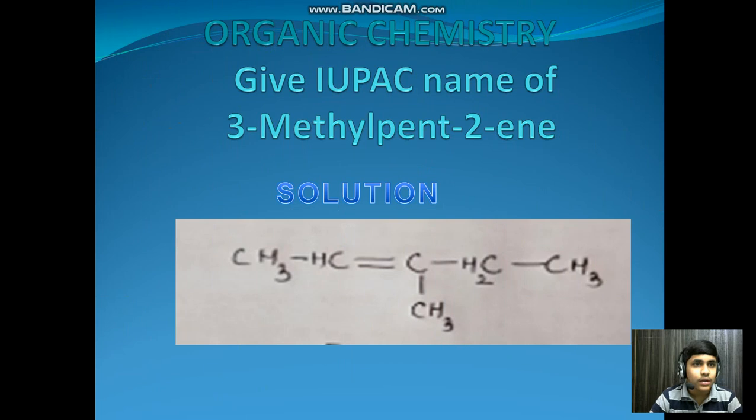Chapter: Organic Chemistry. Give the IUPAC name of 3-methyl-Pent-2-ene. Solution: We know that in pentane, there are five carbons. Here, the second carbon has a double bond with the third carbon and the third carbon has a methyl group. Therefore, it forms 3-methyl-Pent-2-ene.